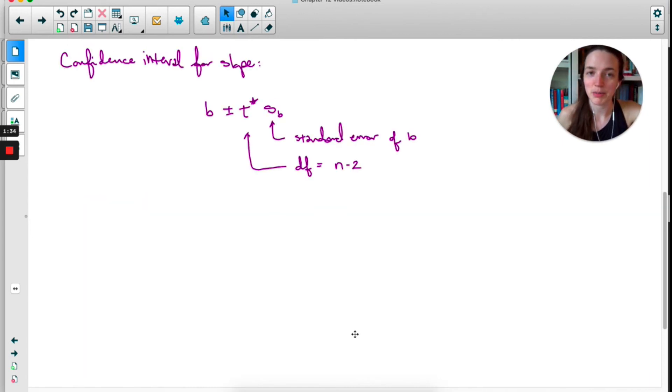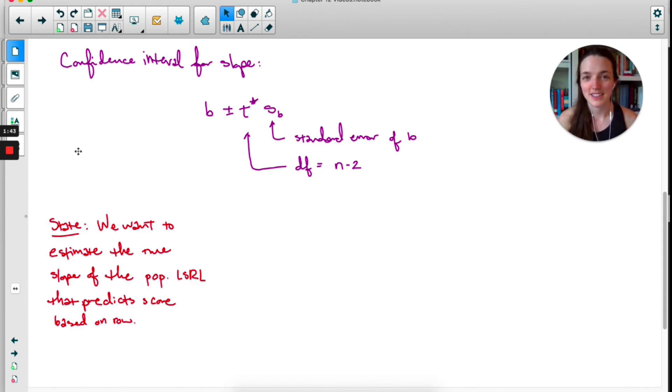I'm not going to spend a ton of time on state-plan-do-conclude because we've done it so much. For the state step, you're basically repeating what you want to find: we want to estimate the true slope of the population least squares regression line that predicts score based on row. I should have said 95% confidence there, but I didn't. Normally you would write out all five parts of LINER. We just did that on the page before.